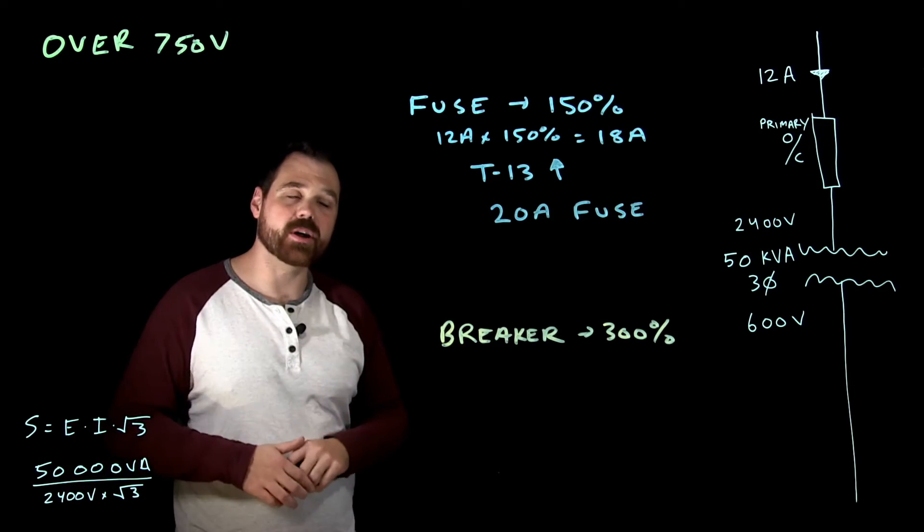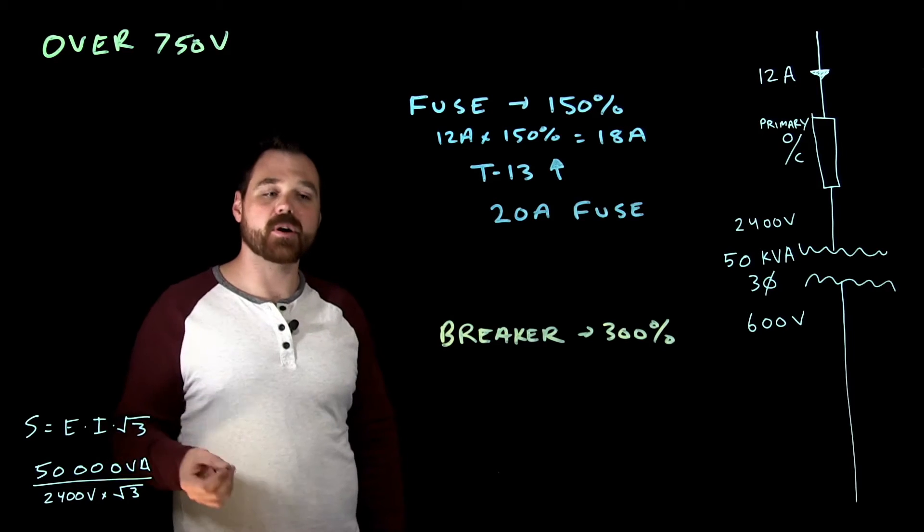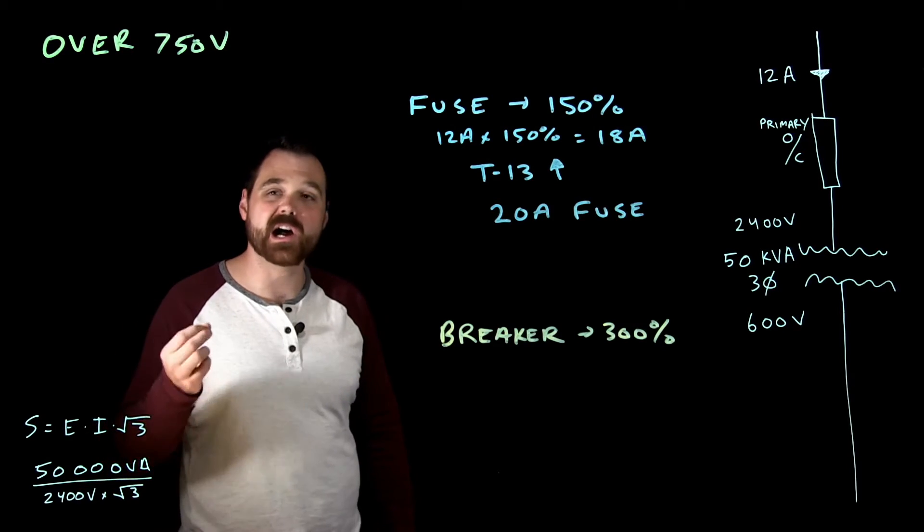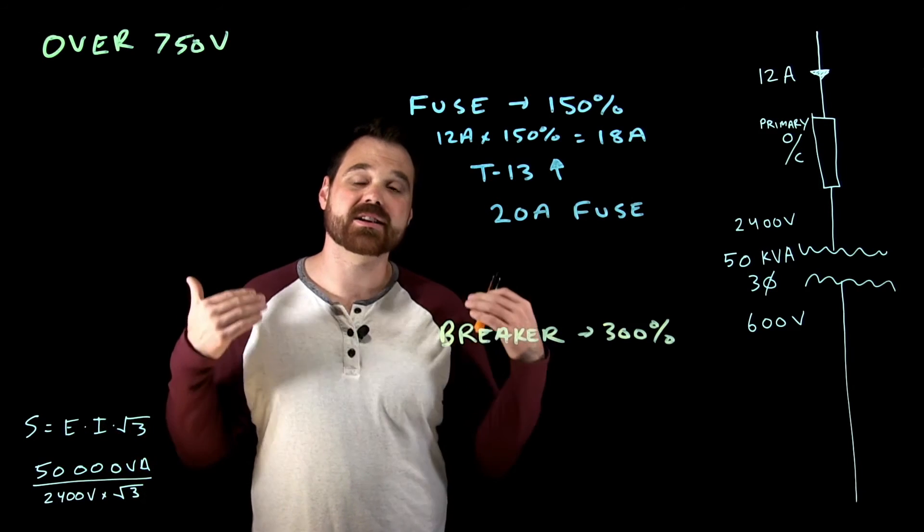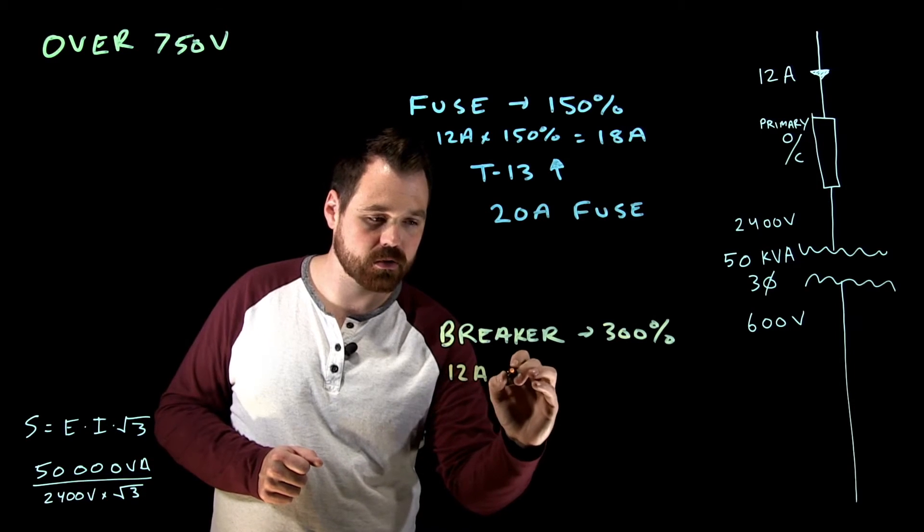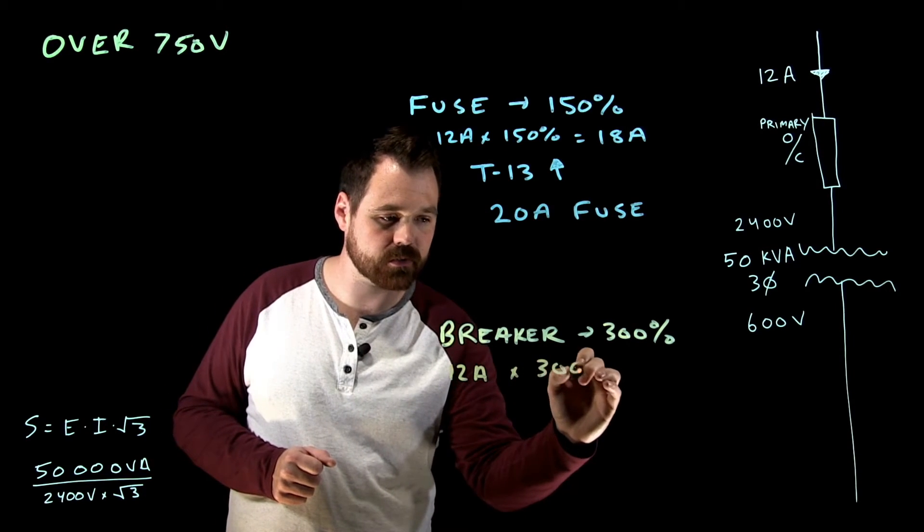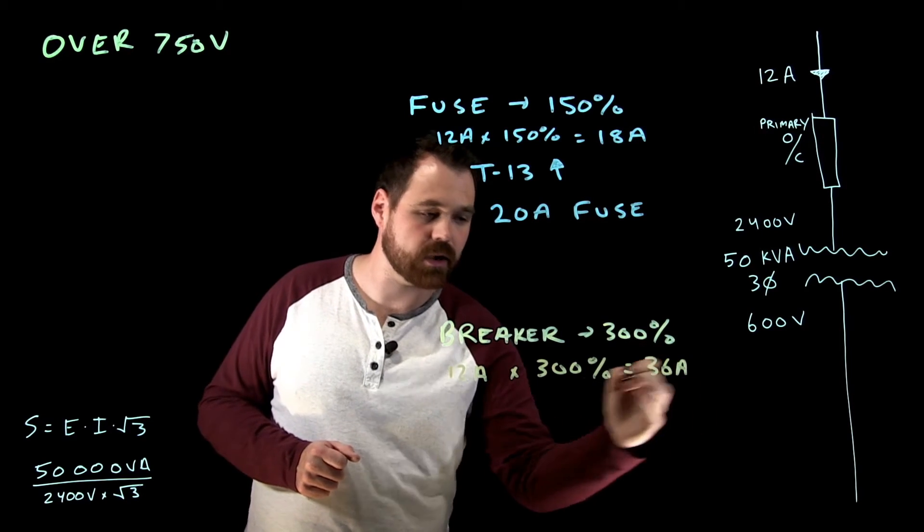Now with a circuit breaker, same rule we're dealing with, but it says that my circuit breaker shall be based upon 300% of the rated primary current, and it says it shall not exceed. So in this case, we are going to take our 12 amps times 300%, which gives us 36 amps.